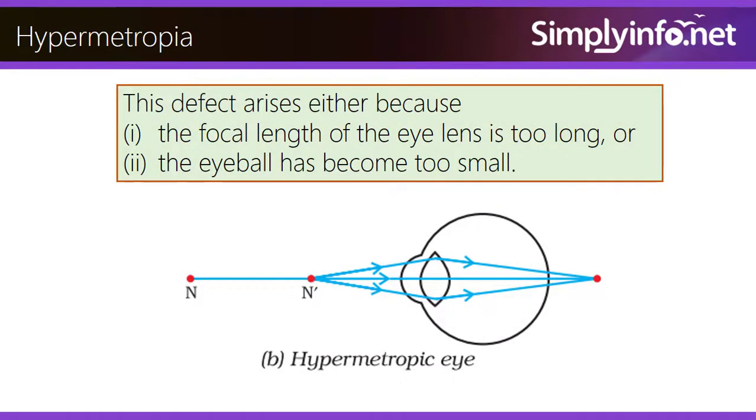This defect arises either because the focal length of the eye lens is too long or the eyeball has become too small.